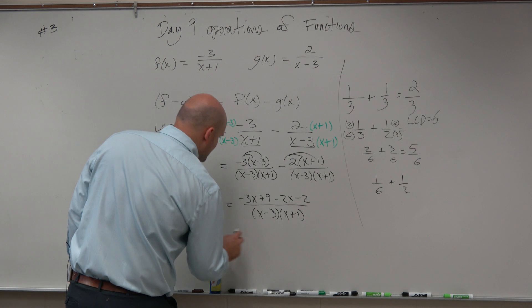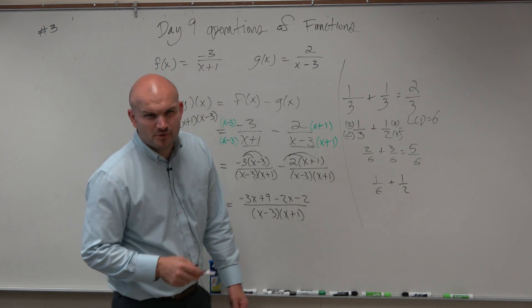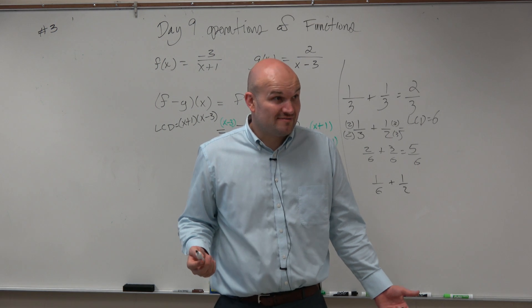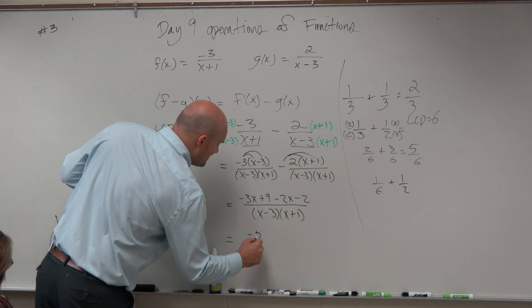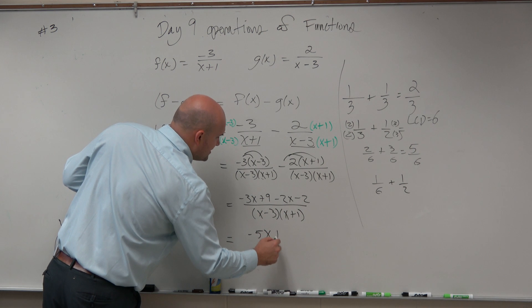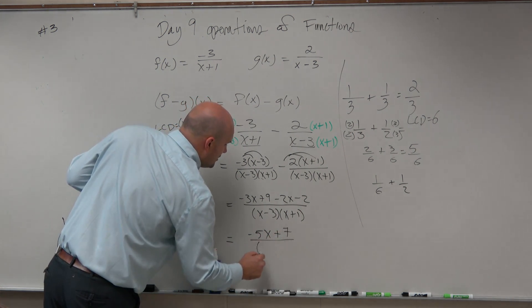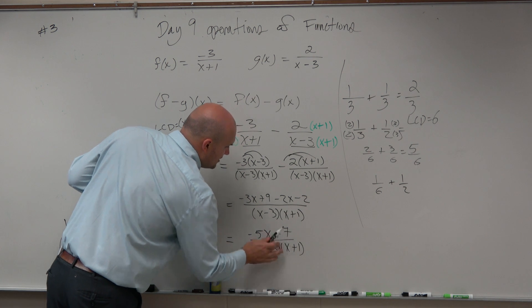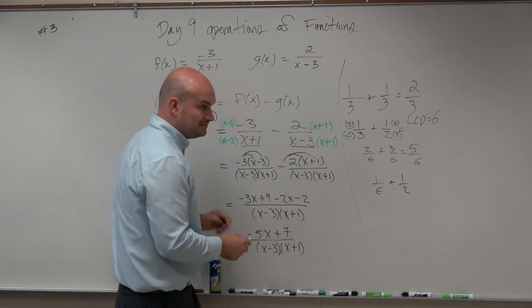So therefore, we'd have, if you owe me $3 and you borrow two more dollars, how much money do you have? Five. You owe me $5, right? Negative 3x minus 2x is negative 5x. 9 minus 2 is a positive 7. All over x minus 3 times x plus 1. So that was your Algebra 2 review for you.